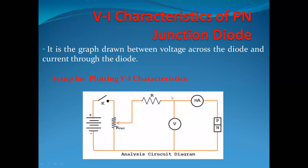This is the connection diagram for VI characteristics of a PN junction diode, where V is in parallel with the diode. The voltmeter is in parallel, and the ammeter is in series with the diode. A variable power supply is connected here.